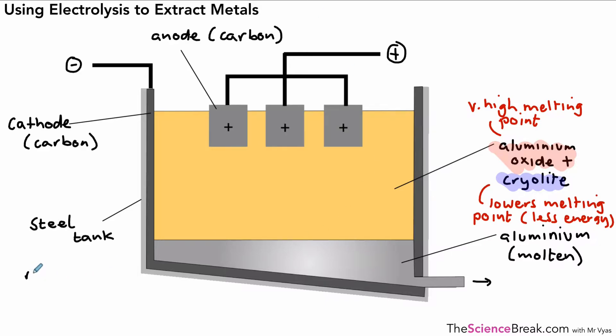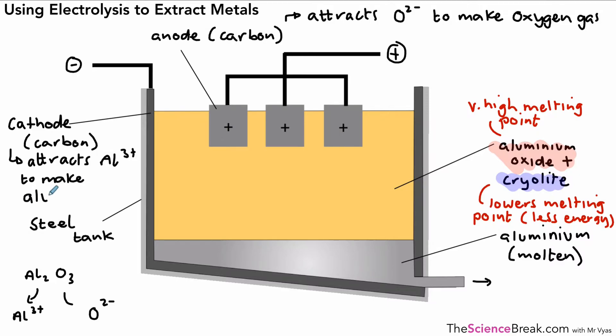So we could take a look at what actually happens at the electrodes. We know aluminum oxide is Al2O3. When that's heated, that will be broken down to aluminum ions, Al3+, and oxide ions, O2-. So at the anode, the anode is positive, so that will attract the oxide ions, the O2-, and these will then combine to form oxygen gas. At the cathode, the negative electrode, that's going to attract our aluminum ions, Al3+, and those will form aluminum metal.